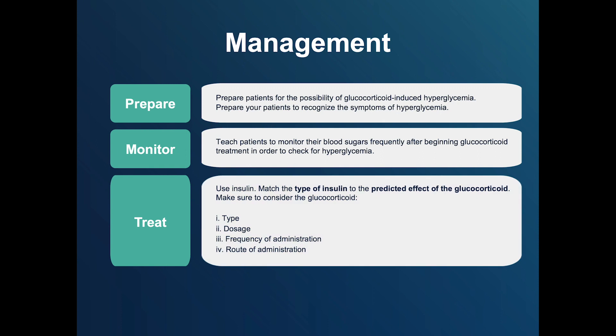The third step is to Treat. Because hyperglycemia can be severe, insulin is generally the most effective treatment. Oral agents such as metformin are often not effective in treating severe glucocorticoid-induced hyperglycemia on their own. The most important principle is to match the type of insulin with the predicted effect of the glucocorticoid prescribed, considering the type, dosage, frequency, and route of glucocorticoid administration.